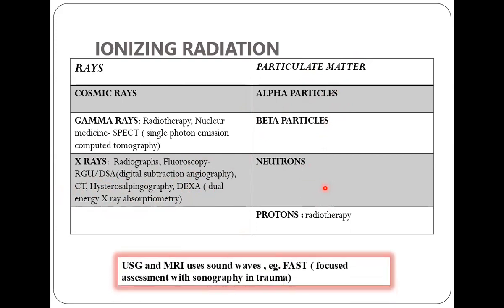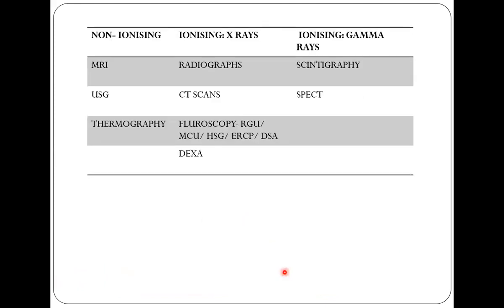Ultrasound and MRI do not use ionizing radiation. Ultrasound is based on the principle of sound waves, and MRI uses magnetic waves. FAST — focused assessment with sonography in trauma — is also based on the principle of ultrasound. In summary: non-ionizing scans include MRI and ultrasound; ionizing scans using X-rays include radiographs, CT scan, fluoroscopy, and DEXA; and gamma ray-based scans include nuclear medicine scans.